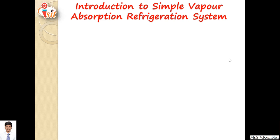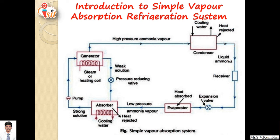We will start with introduction to simple vapor absorption system. In the earlier video lecture we had dealt with vapor compression refrigeration system. There were five main important components: compressor, condenser, expansion valve, evaporator, and in few cases one receiver is also used to store liquid refrigerant temporarily. But in vapor absorption refrigeration system, the compressor is replaced by a generator and absorber unit.